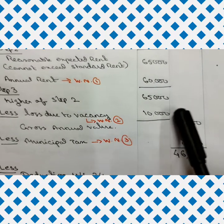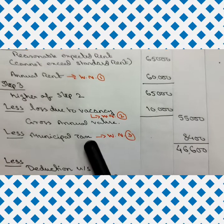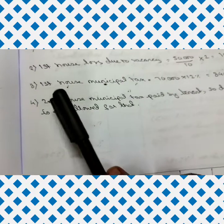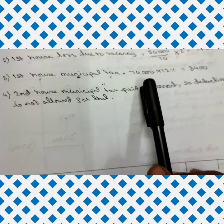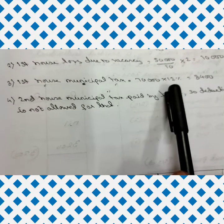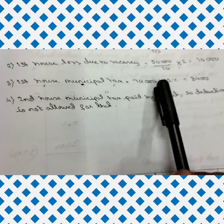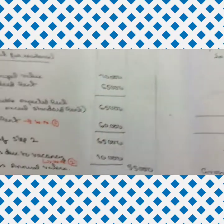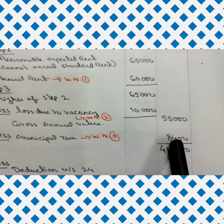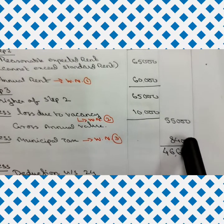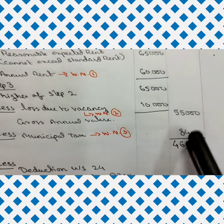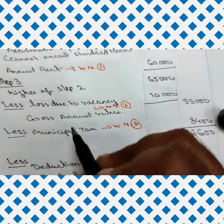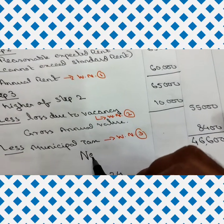From the GAV, deduct municipal tax. Working note 3 for house one: municipal value is 70,000, rate is 12%, so municipal tax = 12% of 70,000 = 8,400. This is paid by the owner so it is allowed as a deduction. After deducting municipal tax of 8,400 from 55,000, the Net Annual Value is 46,600.